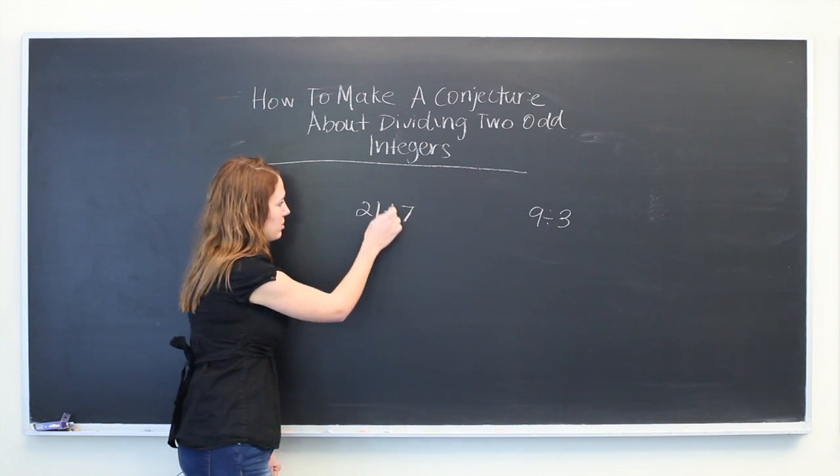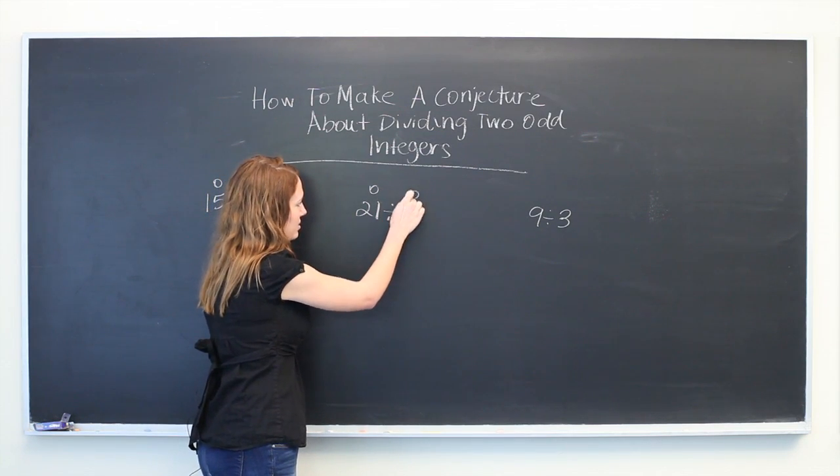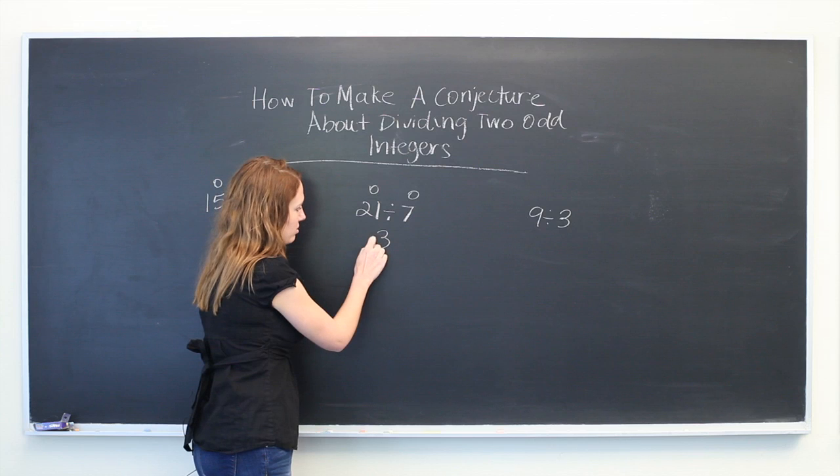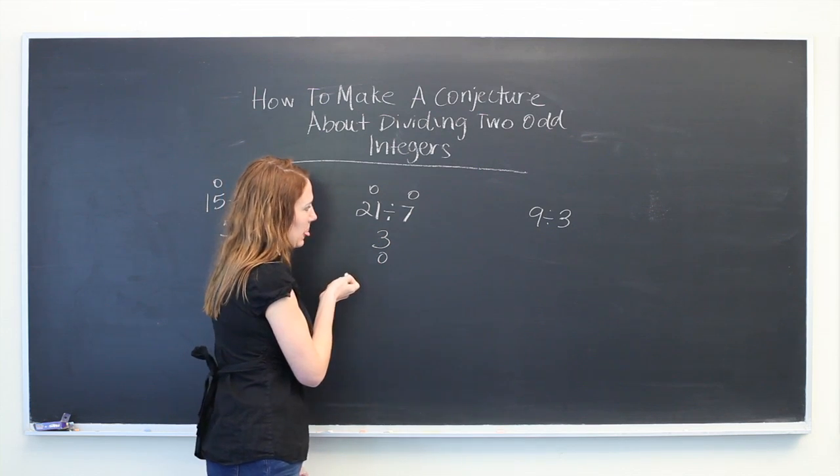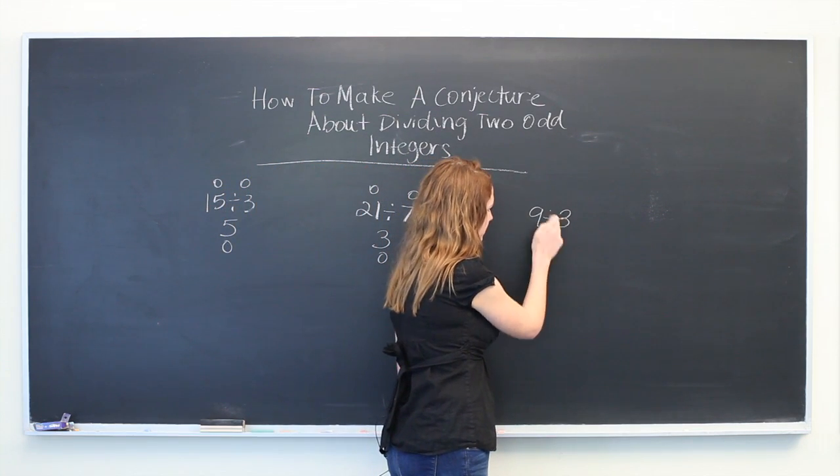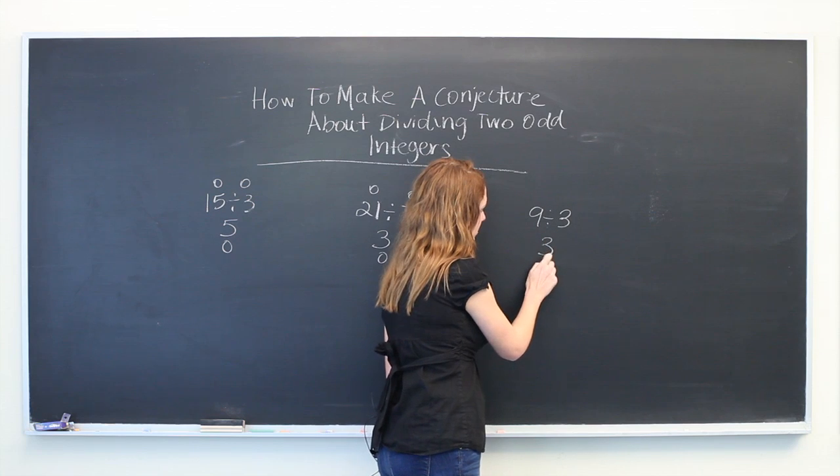21, which is odd, divided by 7 will give us 3, which is also odd. And 9 divided by 3 is also 3.